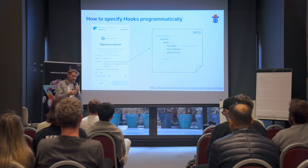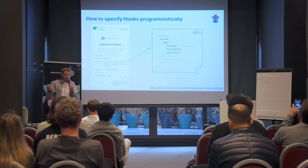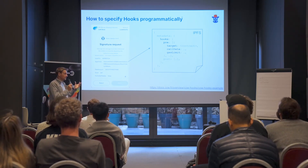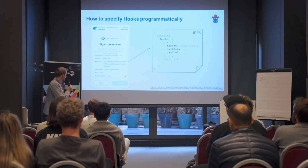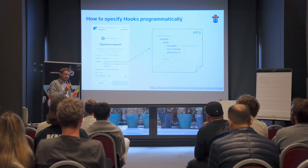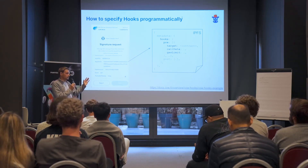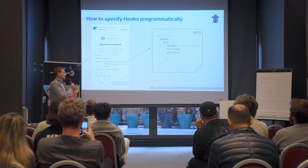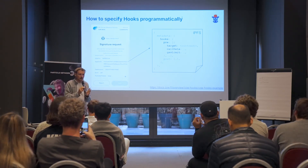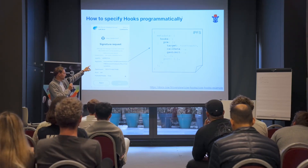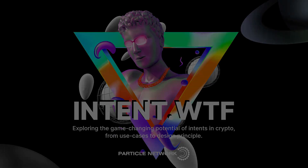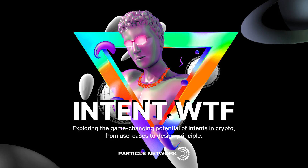If you're wondering how to specify a hook within your CoW Protocol order as a developer or technical user, it's actually quite simple. If you've ever signed a CoW order with MetaMask, you may have seen the app data field — a 32-byte hash that is a pointer to a file posted on IPFS. That file can have arbitrary metadata about your swap intent. What we've added are hooks fields: a list of pre-hooks and post-hooks, where the user specifies the target contract, call data, and gas limit. You upload the file with the hooks to IPFS, get an IPFS hash, specify that hash as the app data you sign to also authorize the hooks, and the protocol will automatically pick them up and execute.